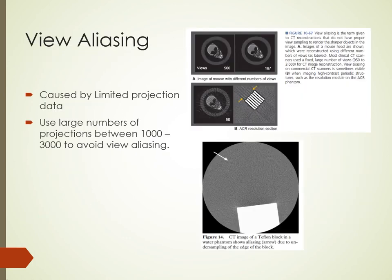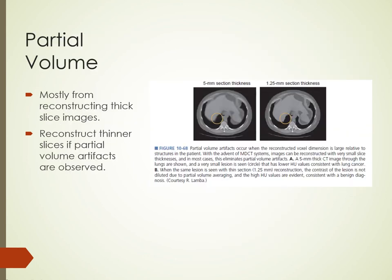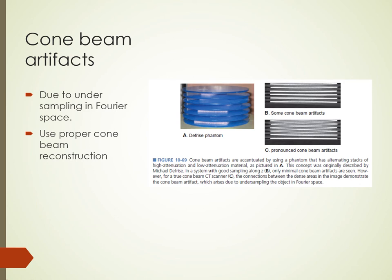View aliasing results when a limited number of projections is used for reconstructing an image. With 50 projections, aliasing is clearly visible. Most commercial scanners use between 1,000 and 3,000 projections to reconstruct images, so view aliasing is not typically apparent. Partial volume effects occur when CT voxels are large enough to encompass several types of tissue such as bone and soft tissue or tissues from different organs. This is often because of the reconstruction of thick slices. Partial volume artifacts are not as common these days because of the small voxel size of most CT images.